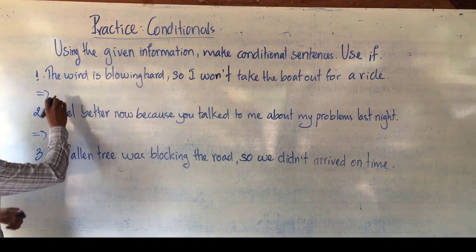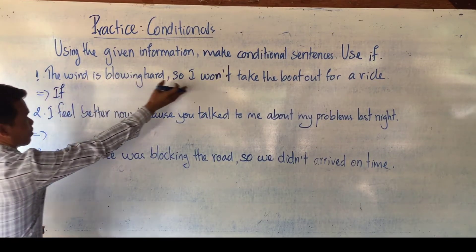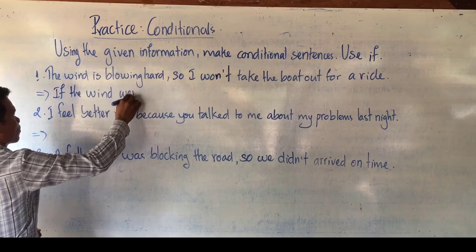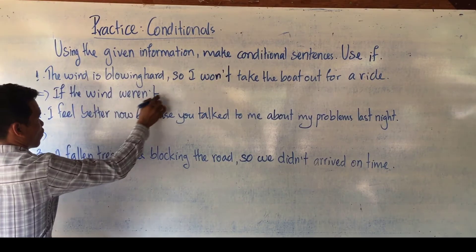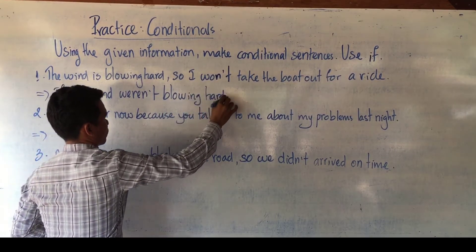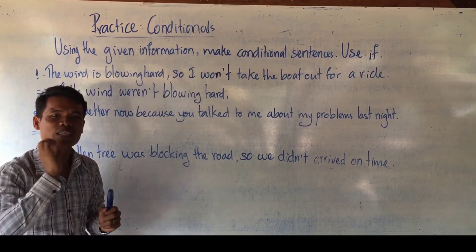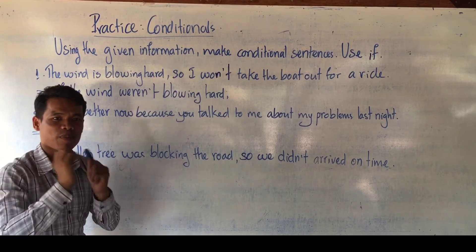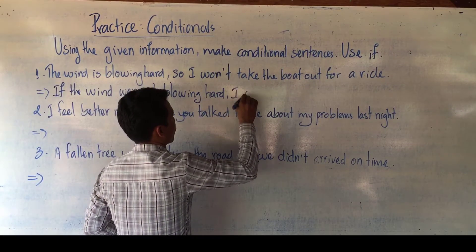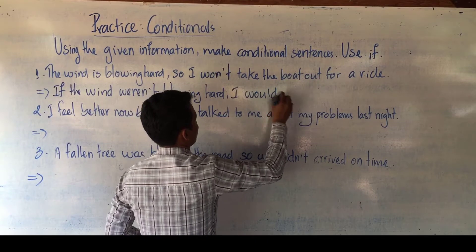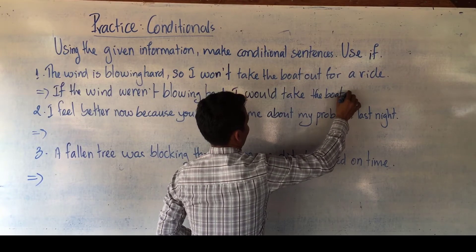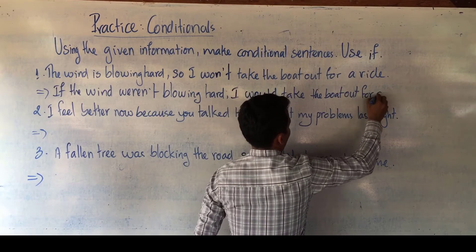So you write the if-clause here and the result clause over there. When we use 'were' in second conditional, it can be applied for all persons — I, he, she, you, they. So: 'If the wind were not blowing hard, I would take the boat out for a ride.'